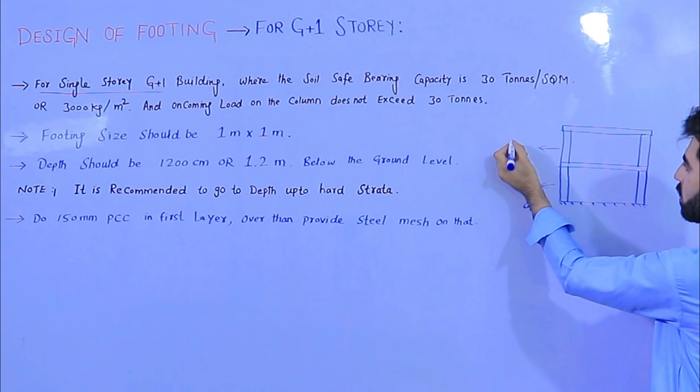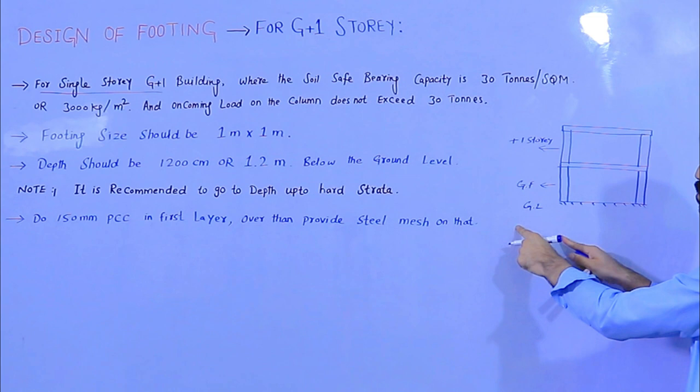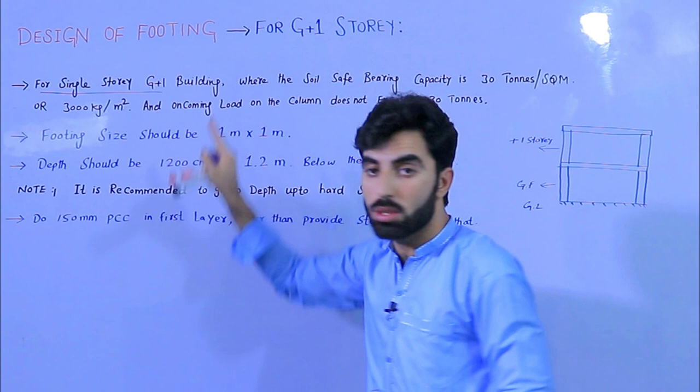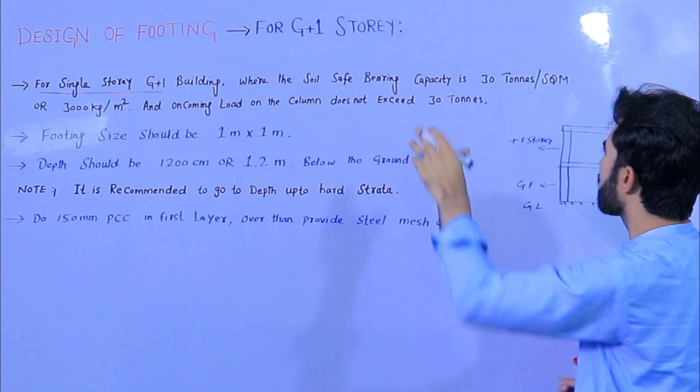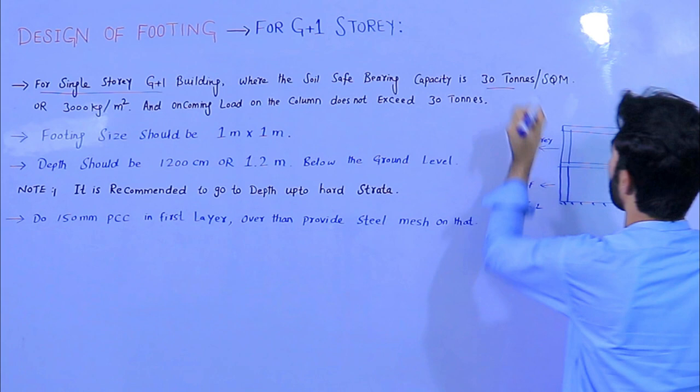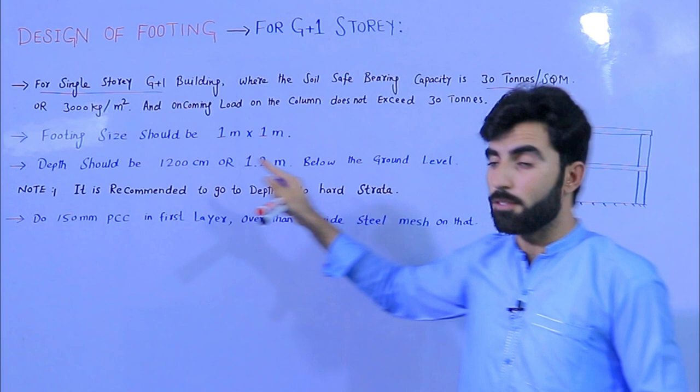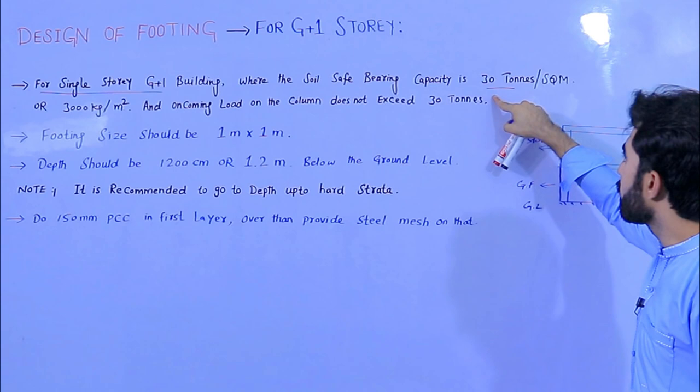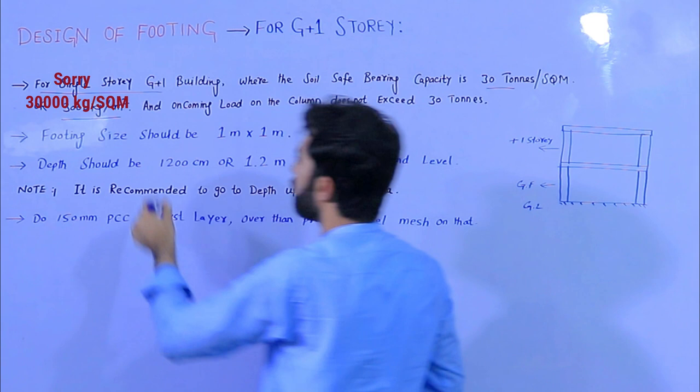For a single story G plus one building — ground floor then first floor — the soil safe bearing capacity is normally 30 tons per square meter for normal soil, which equals 3,000 kg per square meter. The design of footing depends on this soil safe bearing capacity.